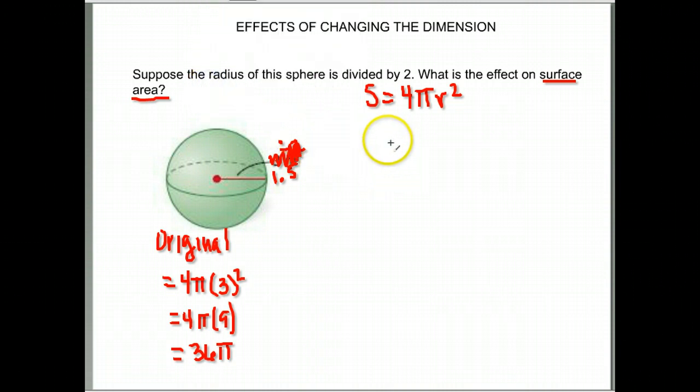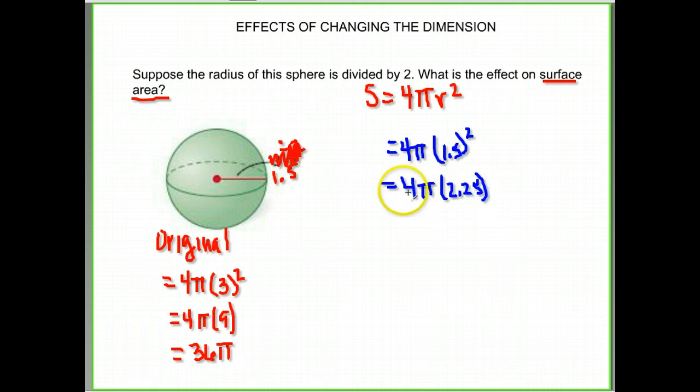Using the same formula, just with our new radius, 4 times π times 1.5 squared. Go ahead and square 1.5. So 1.5 times 1.5 is 2.25. 2.25 times 4 gives me 9.